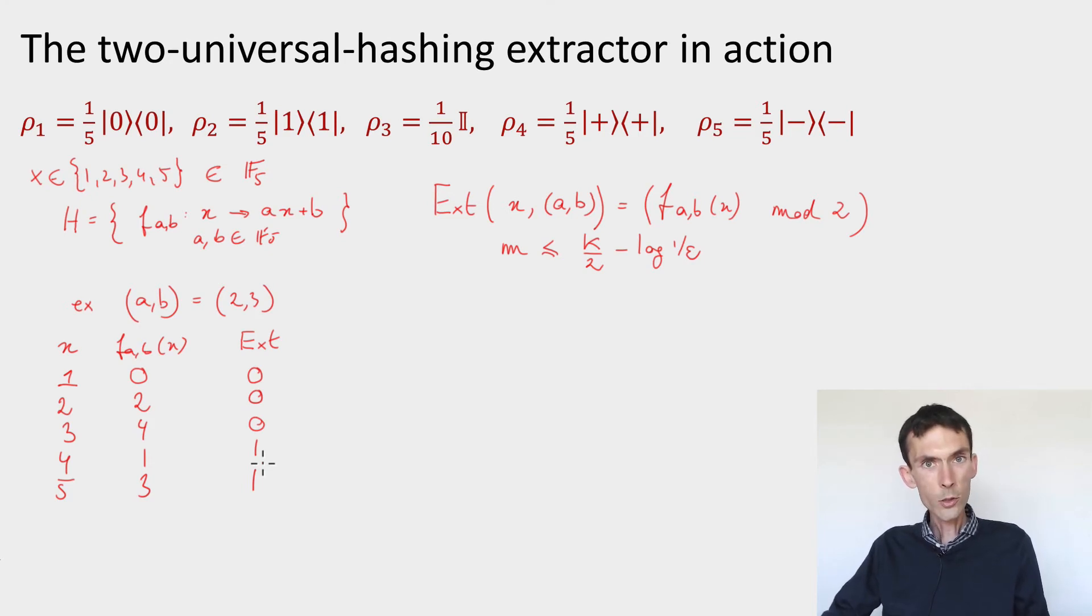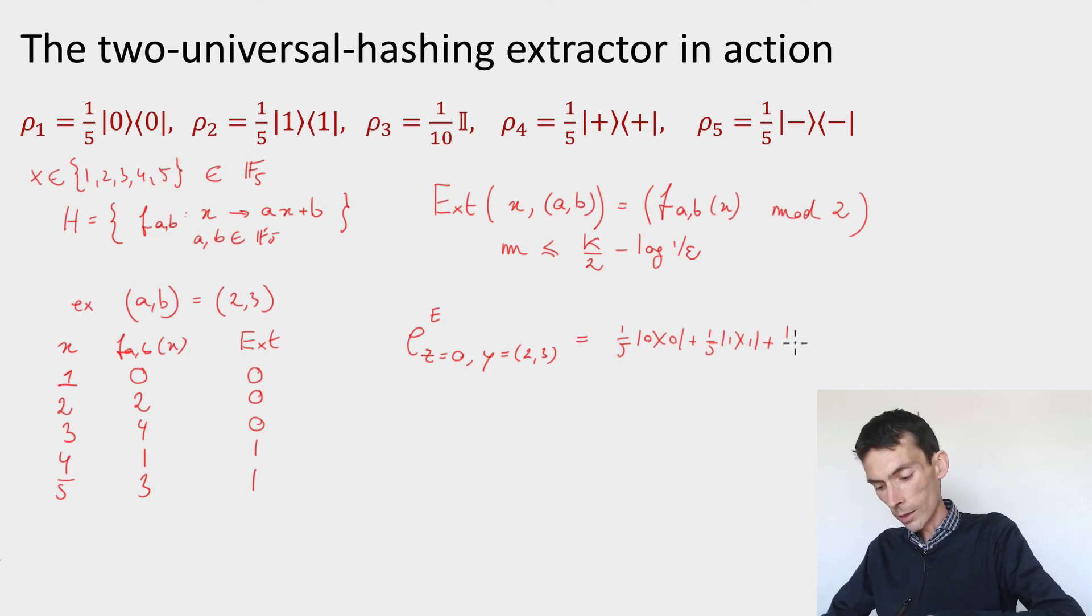So what is the side information now depending on the output? I have two states for the output, so I have either z equals 0, and y here is going to be 2, 3. So if z is 0 then it means the input x was 1, 2, or 3, so I have to add up the three corresponding states. I'll get a fifth of |0⟩⟨0| plus a fifth of |1⟩⟨1| plus a tenth of the identity. I get 1 fifth of the identity plus 1 tenth of the identity, so that's 3 tenths identity.